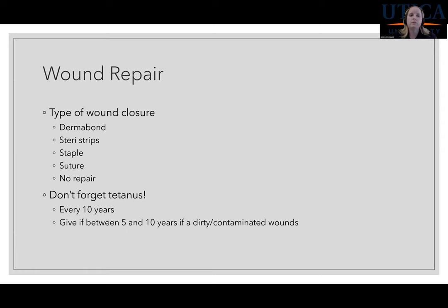For wound repair, there are many different types of wound closures. Dermabond is a type of skin glue. There are SteriStrips, also known as butterfly stitches. You can staple a wound, use suturing, and sometimes you don't repair wounds at all — you allow them to close by secondary intention.